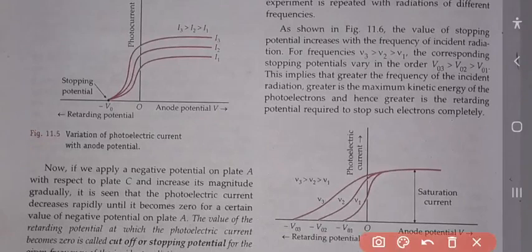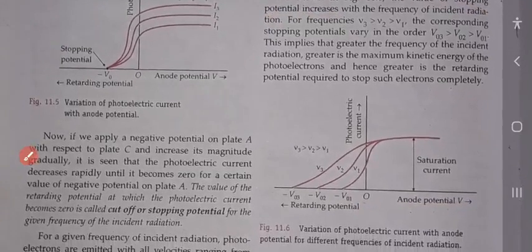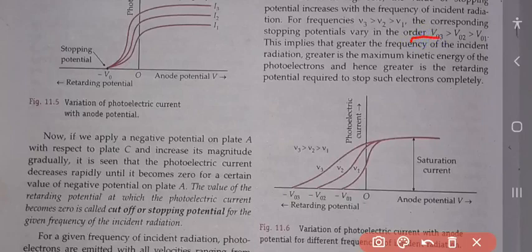As shown in the graph, the value of stopping potential increases with the frequency of incident radiation. For frequencies ν₃ > ν₂ > ν₁, the corresponding stopping potentials vary in order V₀₃ > V₀₂ > V₀₁.